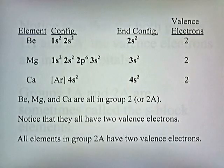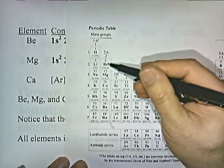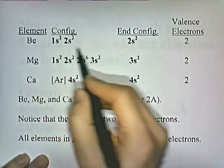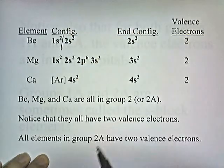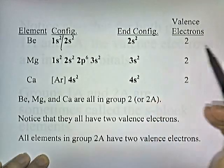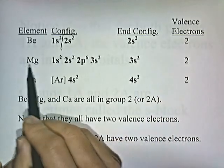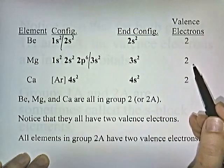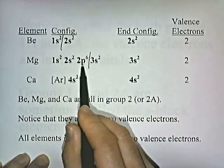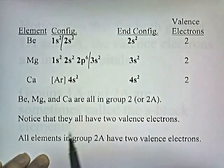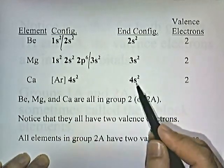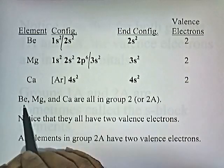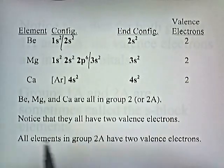Now we're going to look at beryllium, magnesium, and calcium — all in group 2. For beryllium, we look at the highest energy level with electrons, which is the second energy level, and it has two valence electrons. Likewise, magnesium's highest energy level with electrons is the third energy level — two electrons. For calcium, the configuration is argon with 4s2 tacked on. The fourth energy level is the highest energy level with electrons, giving two electrons. So beryllium, magnesium, and calcium all have two valence electrons.